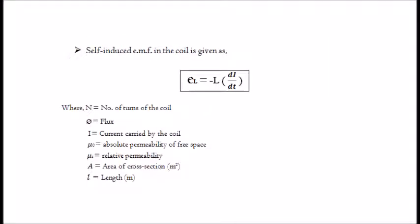Self-induced EMF in the coil is given as: eL equals minus L · di/dt, where N is the number of turns of the coil, φ is the flux, I is the current carried by the coil, μ₀ is the absolute permeability of free space, μᵣ is the relative permeability, A is the area of cross-section in meter squared, and l is the length in meters.